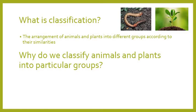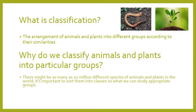So why do we bother to classify plants and animals into different groups? That's because there might be as many as 10 million different species of animals and plants in the world. It's really important to sort them into classes so that we can study the appropriate groups. For example, if you were studying a new species of bird, you might look at other birds in the same class to see if they have similar habitats or eat similar things.